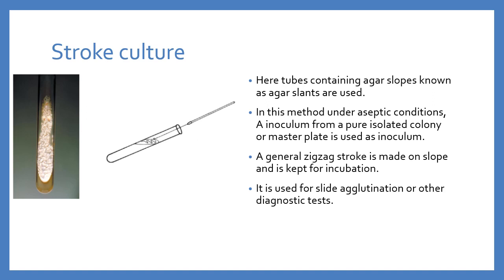Next is stroke culture, where a tube with an agar slope — also known as an agar slant — is used. Under aseptic conditions, inoculum from a pure isolated colony or a master plate is used, and a general zigzag stroke is made on the slope, then kept for incubation. The culture grows on the streak marks on incubation. This method is used for slide agglutination or other diagnostic tests.